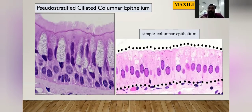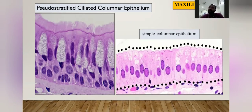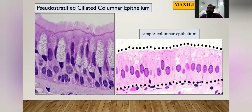For comparison: on the right side of the slide you can see typical simple columnar epithelium, while on the left is our area of interest — pseudostratified ciliated columnar epithelium. If you closely observe, you can see nuclei oriented at different levels, with cilia. On histological examination, you can identify this epithelium by the presence of cilia on the top surface.